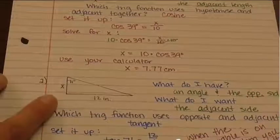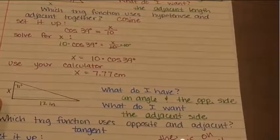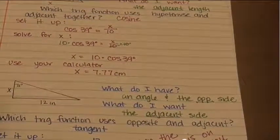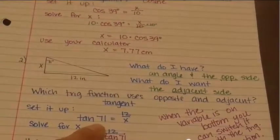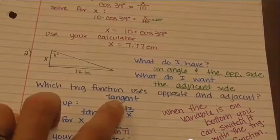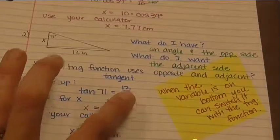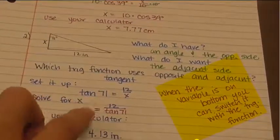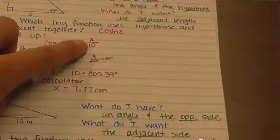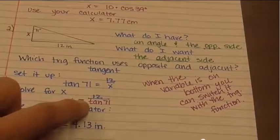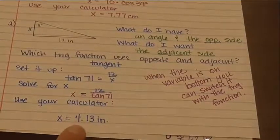In the next example, the triangle has a 71-degree angle, an opposite side of 12 inches, and the adjacent side is missing. What do I have? An angle and the opposite side. What do I want? The adjacent side. Tangent uses opposite and adjacent. So tangent of 71° equals 12 over x. When the variable is on the bottom, you switch the trig function and the variable — so x equals 12 divided by tangent of 71°. When x is on top it's multiplication; when x is on the bottom it becomes division. Type 12 divided by tangent of 71 into your calculator: x equals 4.13 inches.